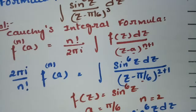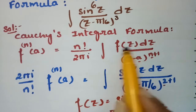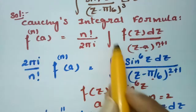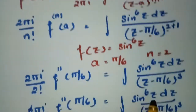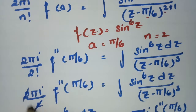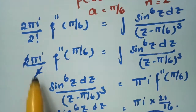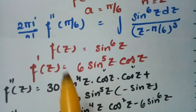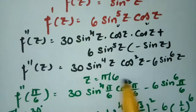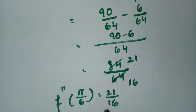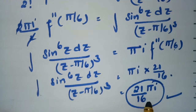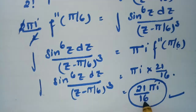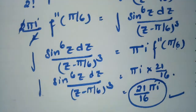Substituting back, the integral equals πi times 21/16, so the final answer is 21πi/16. This is how we solve using Cauchy's integral formula: we identified f(z) = sin⁶z, a = π/6, and n = 2, then computed the second derivative, substituted z = π/6 to get 21/16, giving the final answer 21πi/16.